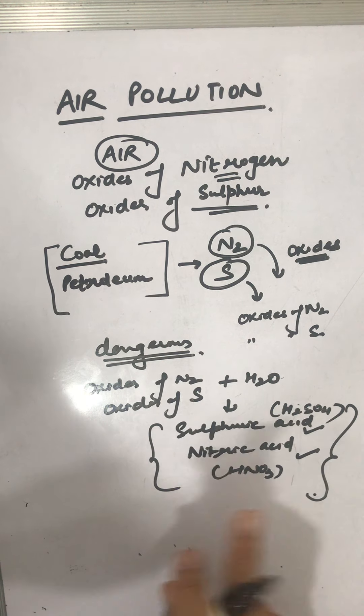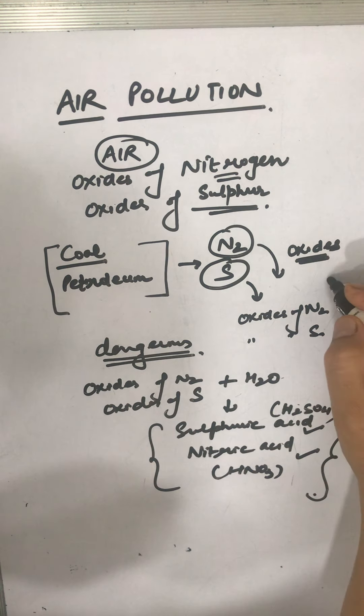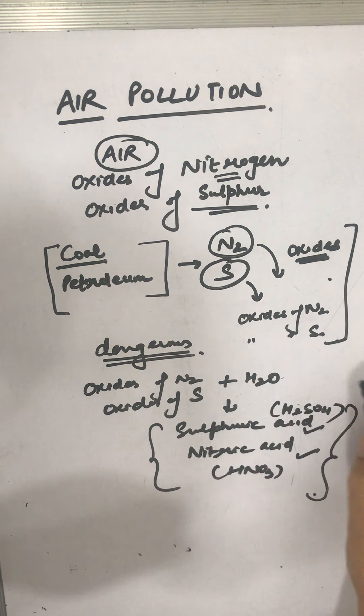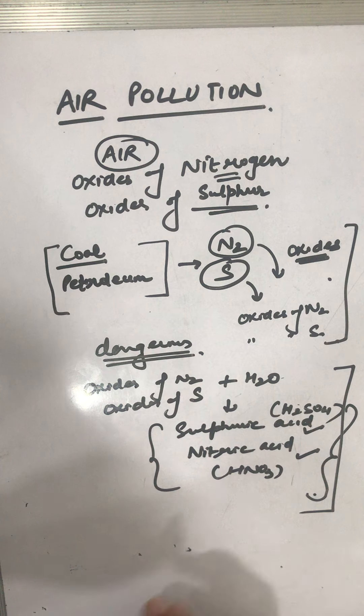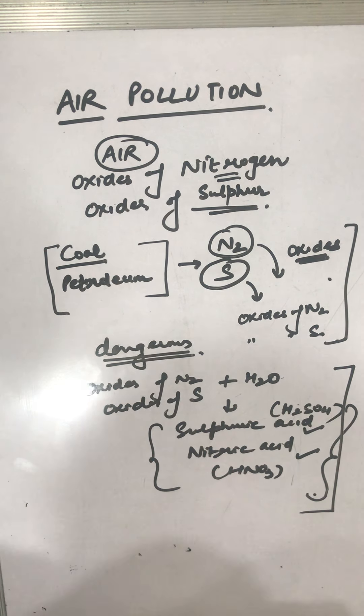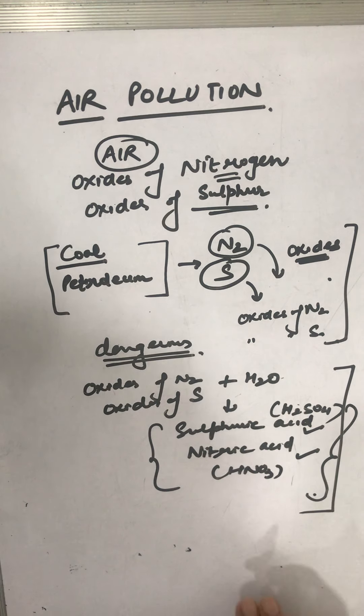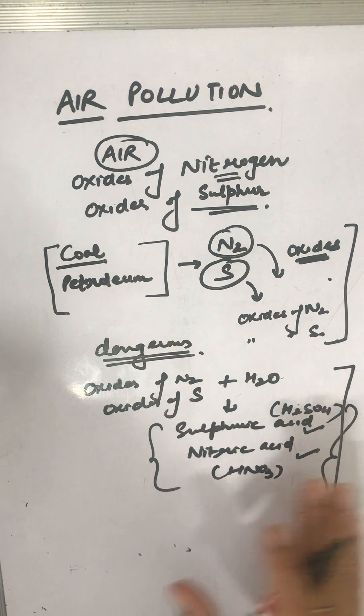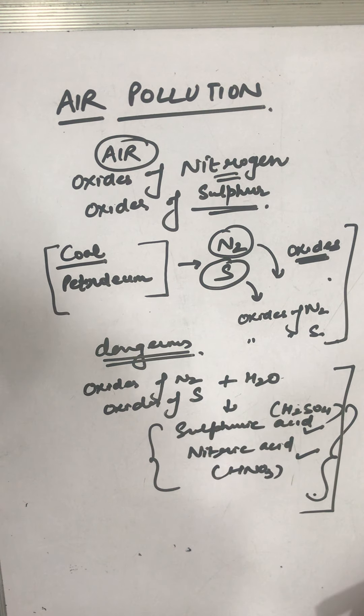Combustion of fossil fuels also increases, so what happens? First effect: inhalation problems. Second effect: acid rain formation. How are these fossil fuels otherwise dangerous? They increase the amount of suspended particulates in air. The third effect: unburnt carbon particles which are suspended here and there we call hydrocarbons.